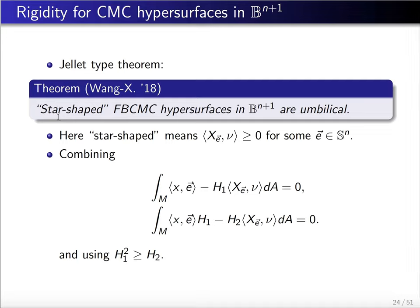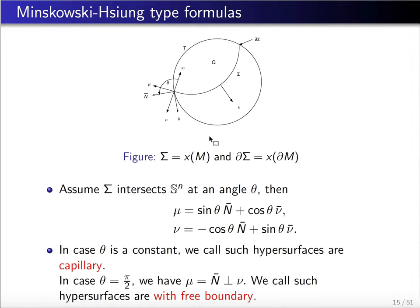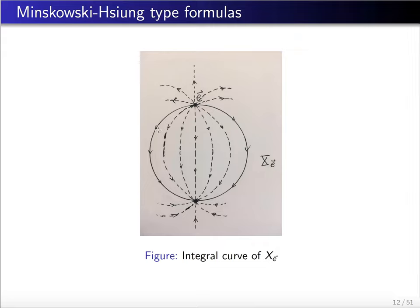Here the star-shapedness is not the usual one. The star-shapedness means that the conformal Killing vector field X_e dotted with nu is now negative for some unit vector e in the sphere. This means the hypersurface in the unit ball intersects each integral curve of X_e at most once and exactly once.